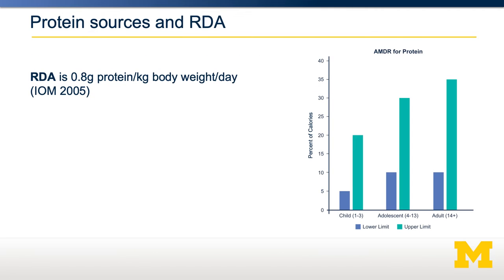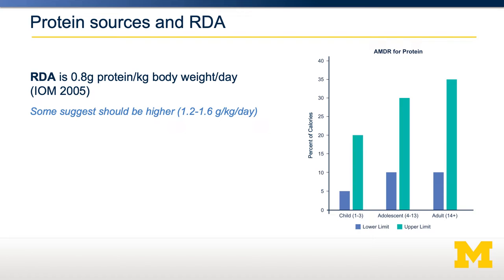The recommended daily allowance for protein is 0.8 grams of protein per kilogram of body weight per day. This was set by the Institute of Medicine in 2005. Some people suggest that it should be much higher, maybe even as high as 1.6 grams per kilogram per day. The acceptable macronutrient distribution range for an adult is between 10 and 30%, which is a very wide range between the lower and upper limits.